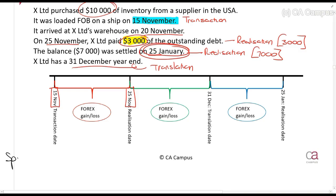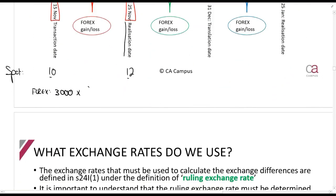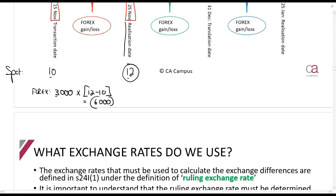Using example spot rates: on the 15 November transaction date the rate was R10; on the 25 November realization date it was R12. Since you are a buyer who expected to pay R10 but now pays R12, that is a forex loss. The forex loss is calculated as $3,000 × (R12 − R10) = R6,000 forex loss. Always reason out whether it is a gain or loss — don't just rely on whether the number is positive.